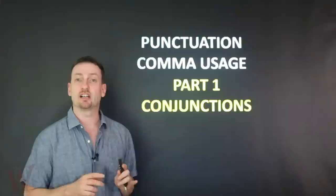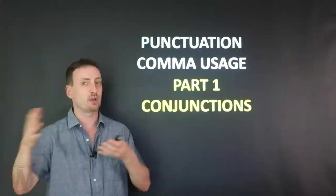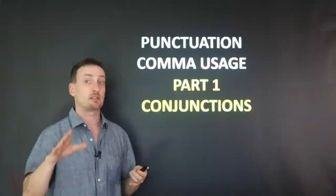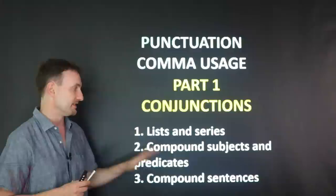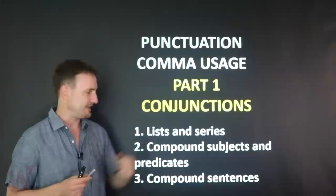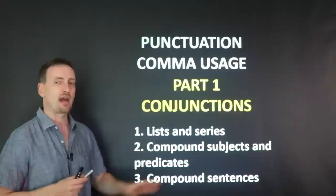I'm going to look at conjunctions — how to use the comma with 'and', 'but', 'for', 'so', 'yet', and so on, because these tend to be the more confusing ones, especially for those of you taking the IELTS, TOEFL, or other English exams where you need to write an essay. We're going to look at three things: commas in lists and series, compound subjects and predicates, and compound sentences.